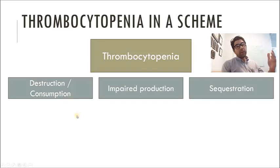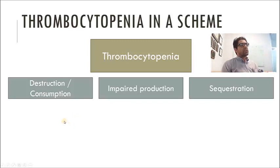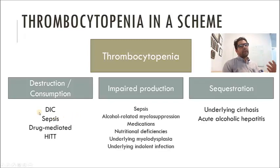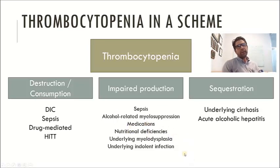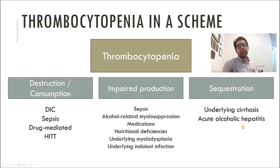Under each of these major buckets, I can start to think of specific causes. For destruction/consumption, I might think about DIC, sepsis, drug-mediated causes, or HIT. For impaired production, I can think of sepsis, alcohol-related myelosuppression, medications, nutritional deficiencies, or underlying myelodysplasia. Might he have sequestration? He actually has underlying cirrhosis, and if there's some acute alcoholic hepatitis and portal hypertension, the spleen might be enlarged with some sequestration.